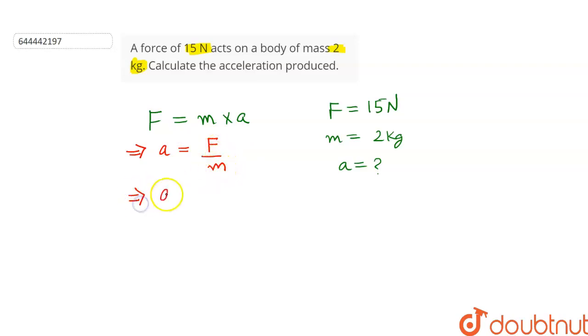This will give us acceleration is equal to 15 Newton divided by 2 kg. So the acceleration comes out to be 7.5 meters per second square.